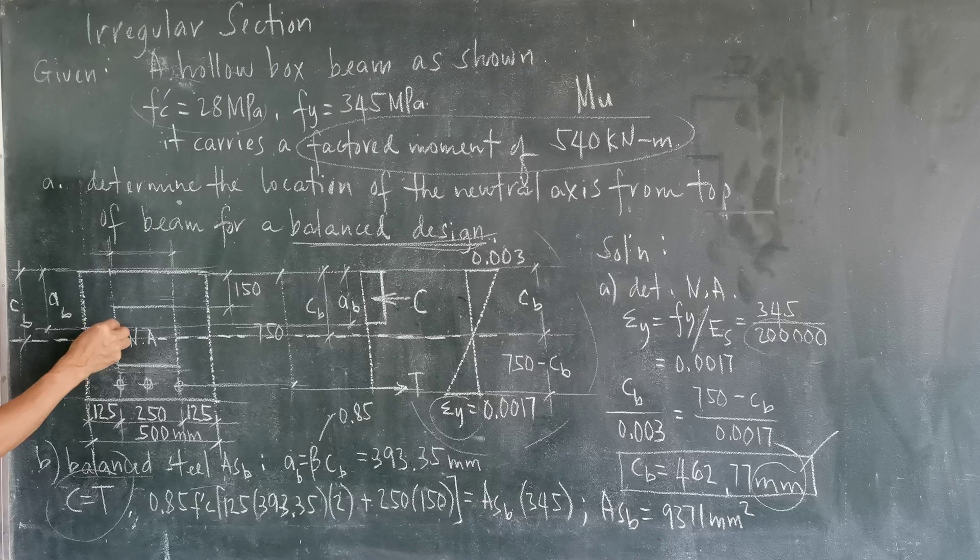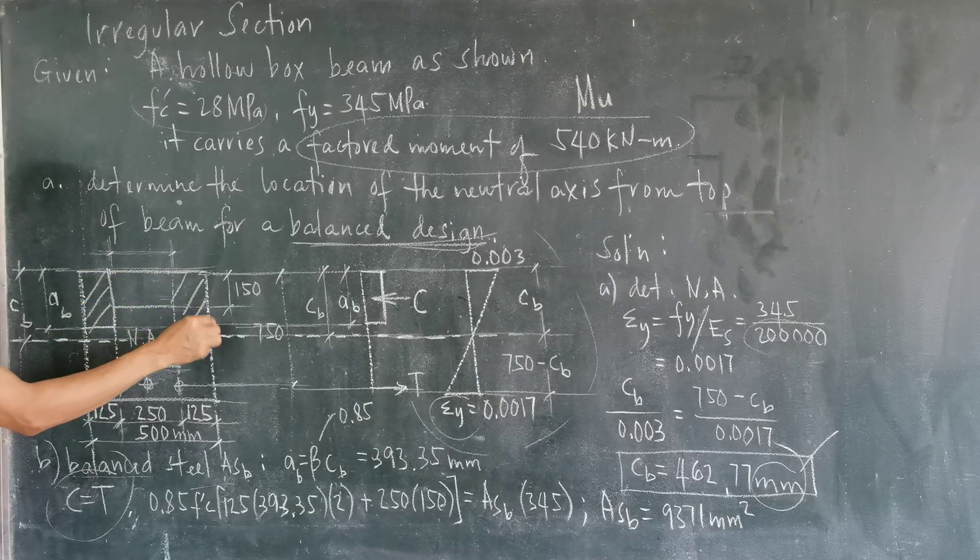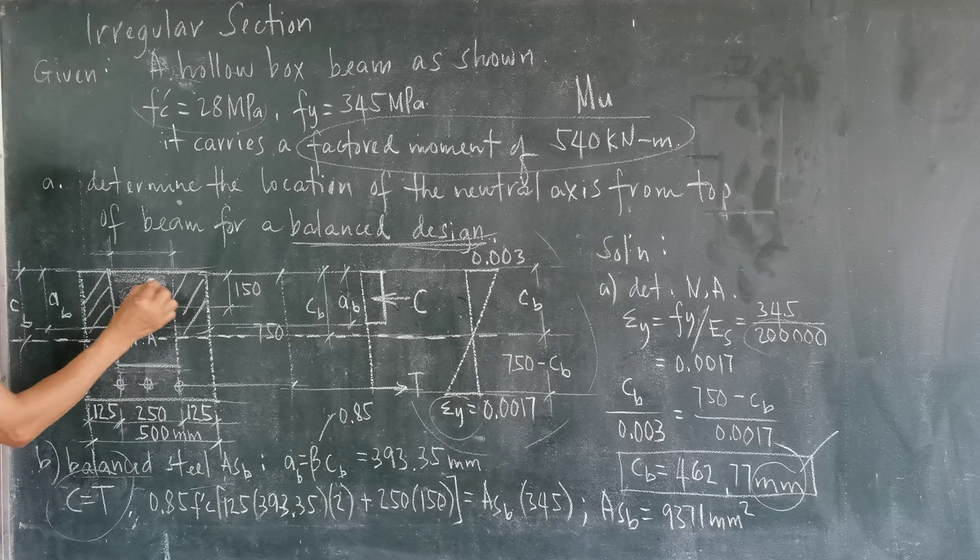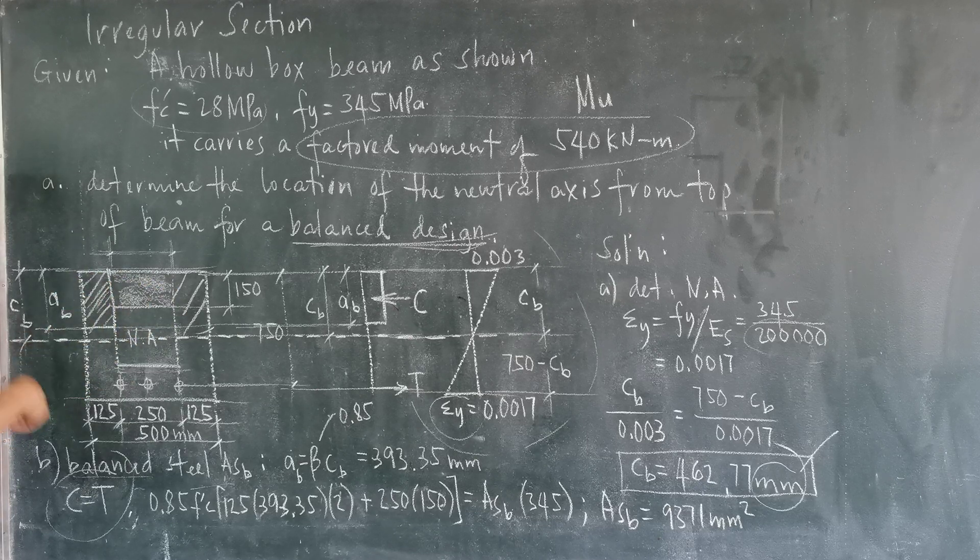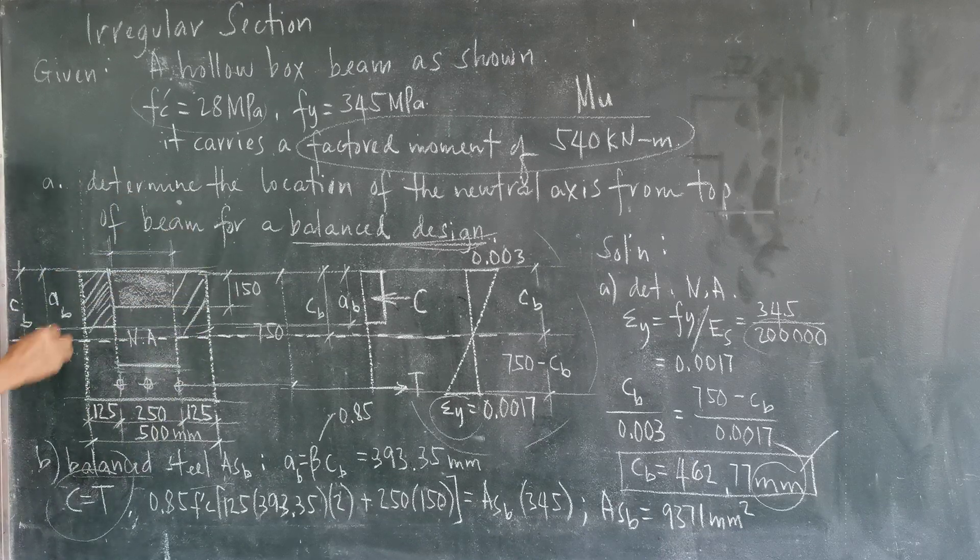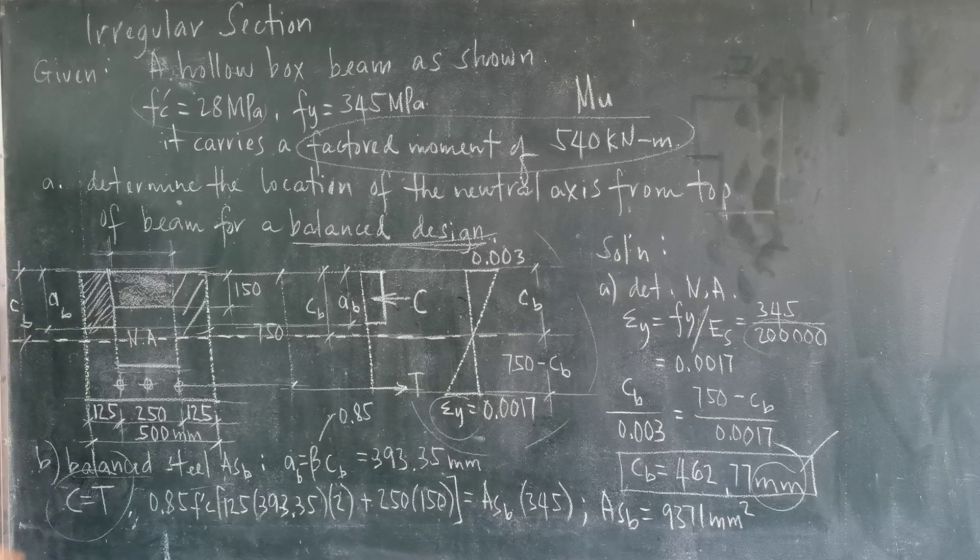This is now the area under compression, this shaded part and this other shaded part. So this shaded part of the beam is now under compression. But we will divide this into regular areas.